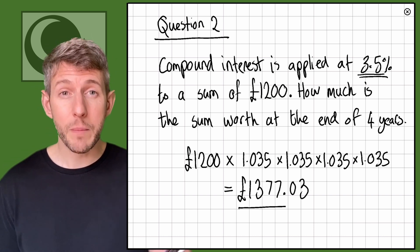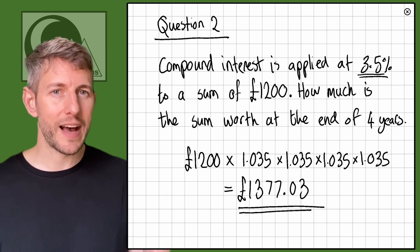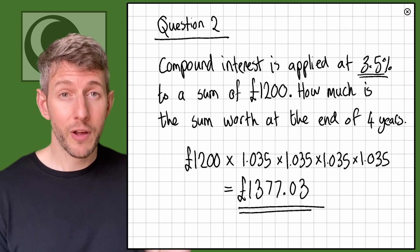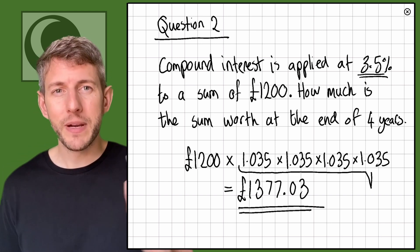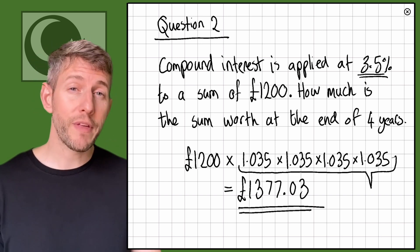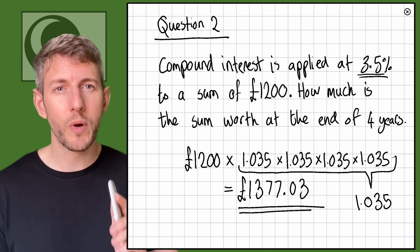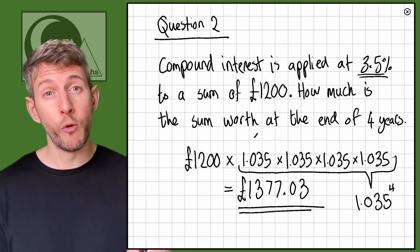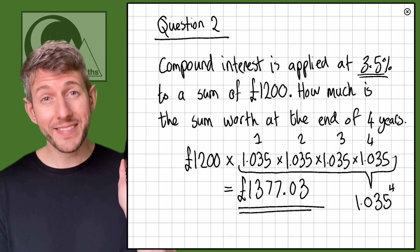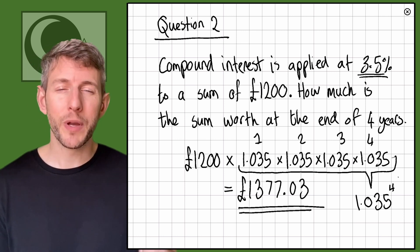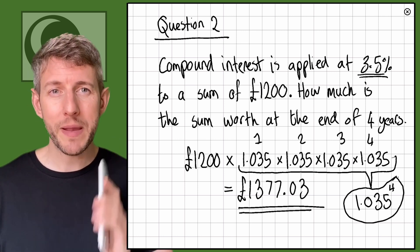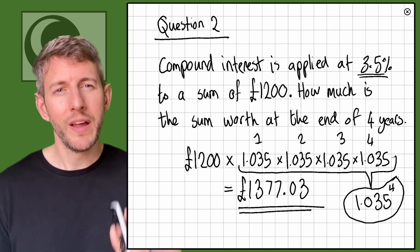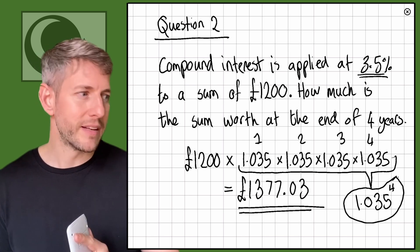Remember, I didn't need to write 1.035 five times. I could have simply done 1,200 times 1.035 to the power of four — wait, five years means to the power of five. I wrote it out because not everyone has a calculator that supports powers, and it's always good to remember what that means.